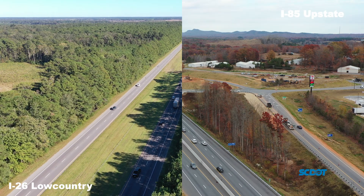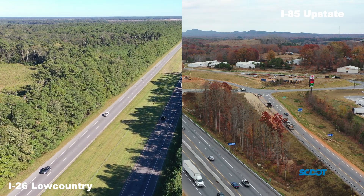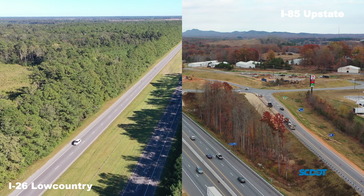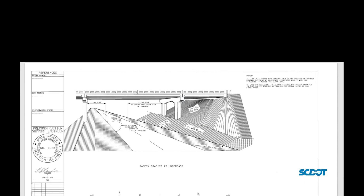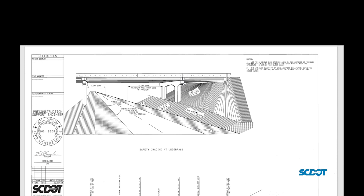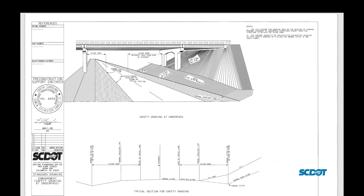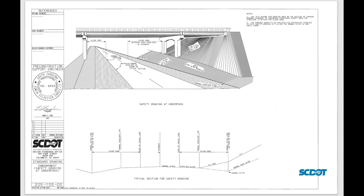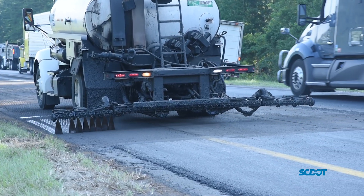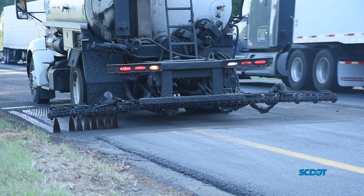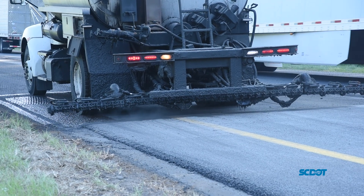Our state's interstate highways are built on diverse geographical features. To get the right cross slope for every stretch of interstate, highway engineers develop unique plans for each one. In the construction phase, cross slope correction is a process that takes time and the work requires various stages.